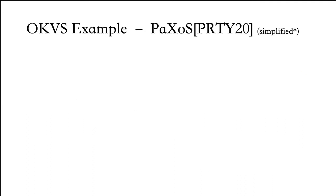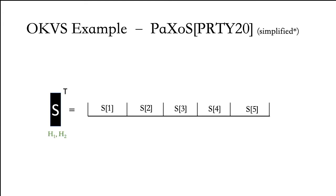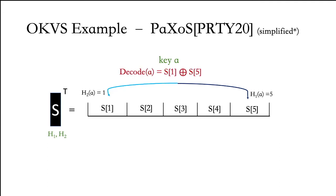The next example is the binary OKVS Paxos, which is also the starting point to build a more efficient OKVS. Paxos has hash functions h1 and h2 as its parameters. I will present a simplified version and start by showing how to decode or probe a value from S. For a key A, we look at positions given by both hash functions — h1 which is 5 in this case, and h2 which is 1. We decode by computing the XOR of the values stored in these positions, so decode(A) = S1 XOR S5.